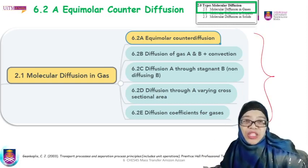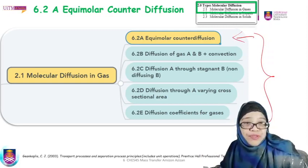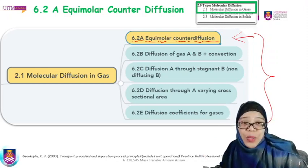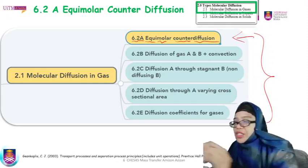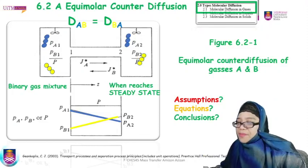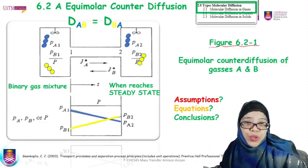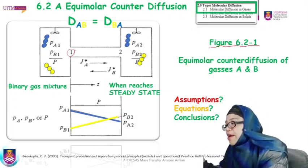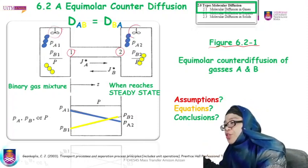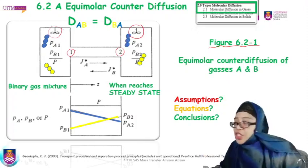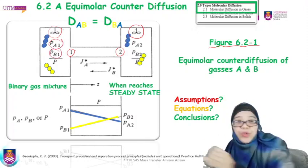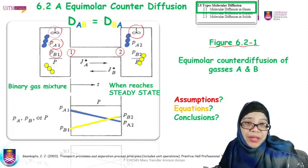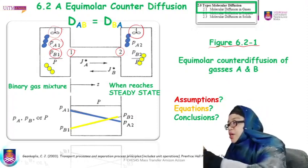Let us first look into the first subsection of molecular diffusion in gas, which is section 6.2a: equimolar counter diffusion. From figure 6.21 in the textbook, you can see two chambers set up — chamber number 1 and chamber number 2. Each chamber has stirrers to allow uniform concentration of molecules A and molecules B.